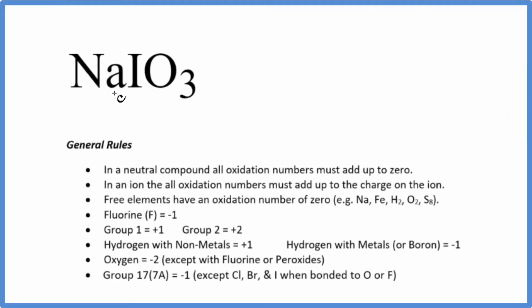In this video we'll find the oxidation numbers for each element in NaIO3. The first thing to note is we have a neutral compound - there's no negative or positive charge after it. All the oxidation numbers are going to add up to zero.